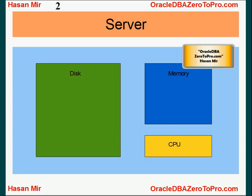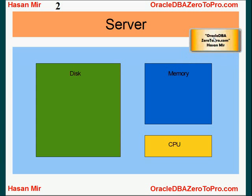Let's start with the basics. What are the main components of a server? Disk, memory, and CPU — central processing unit. A server could have more than one CPU, memory unit, and disk of course, but these are the main components.